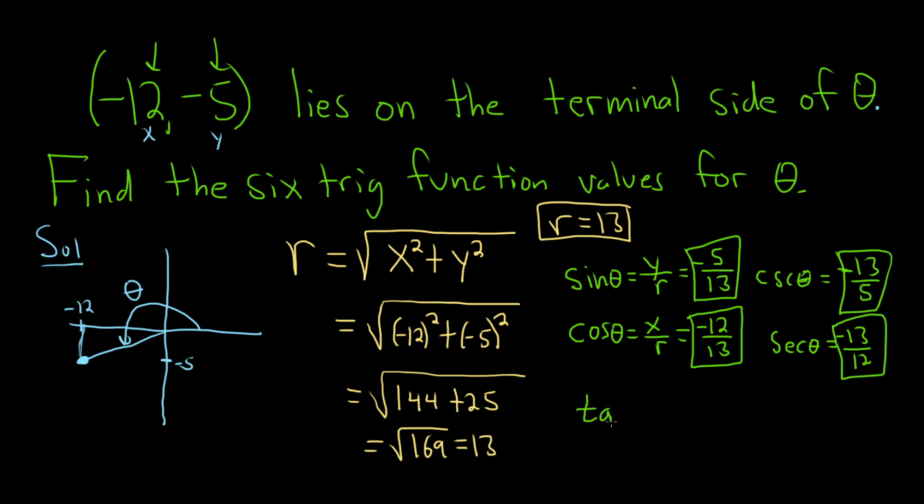The last one would be the tangent of theta. And that's given by the formula y over x. So in this case y is negative 5 and x is negative 12. So this will actually become positive 5 over 12.